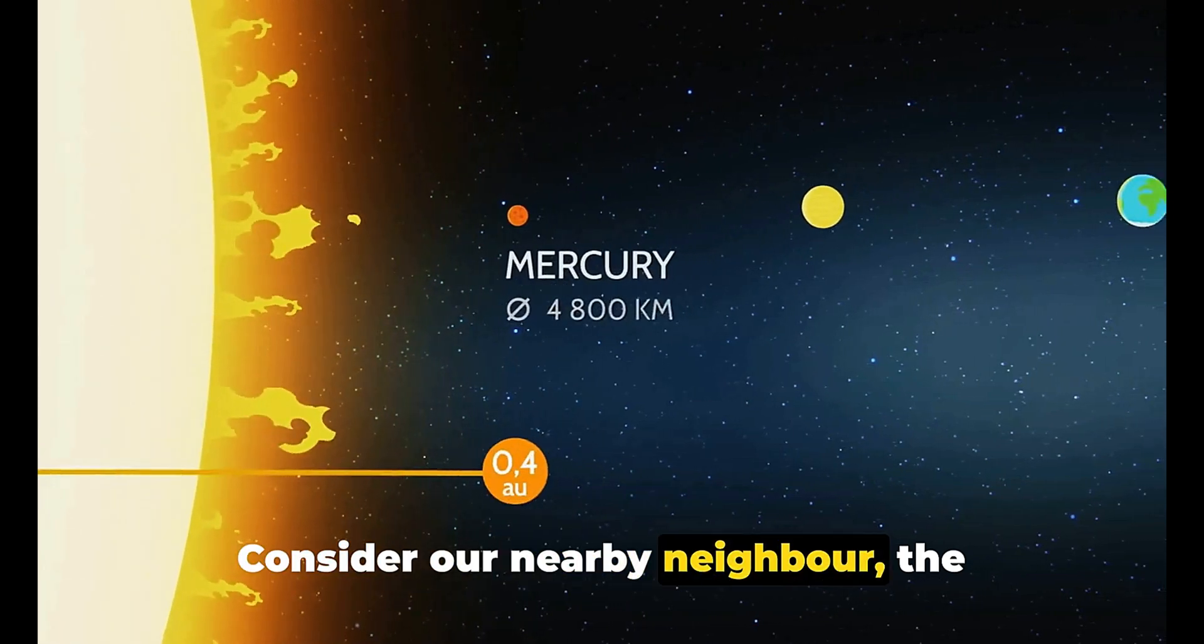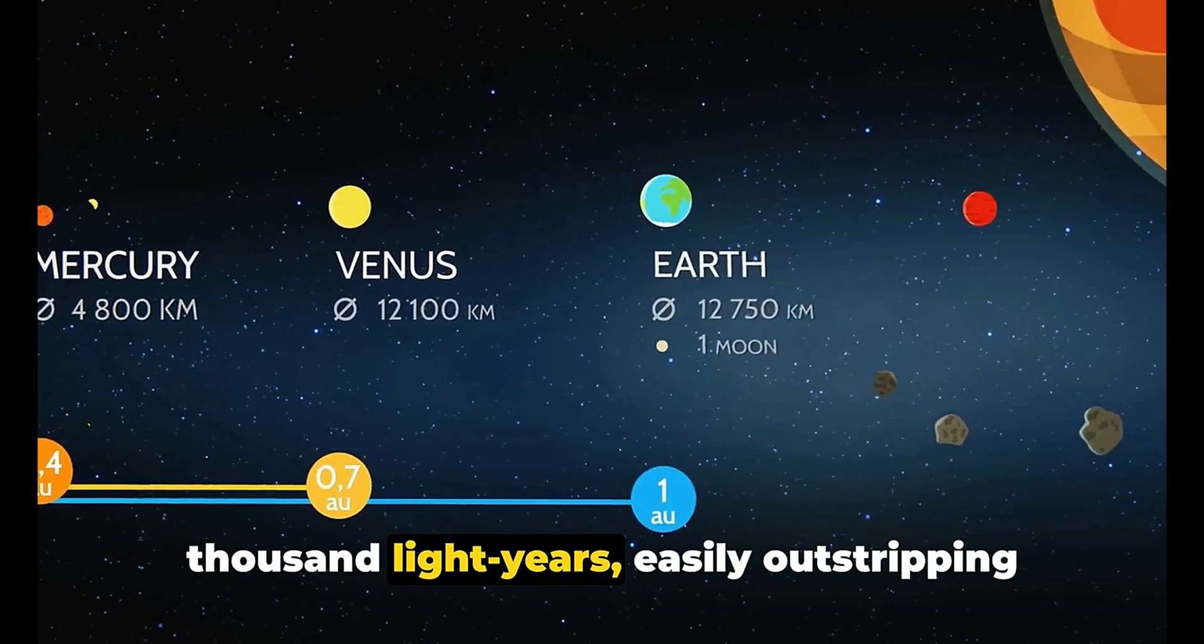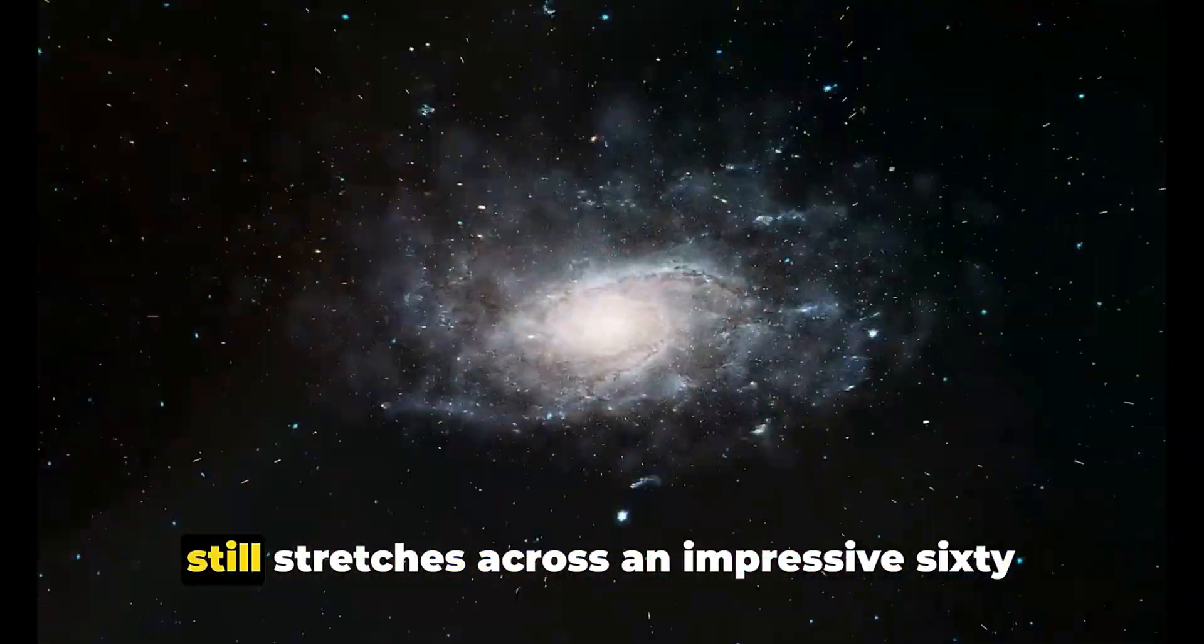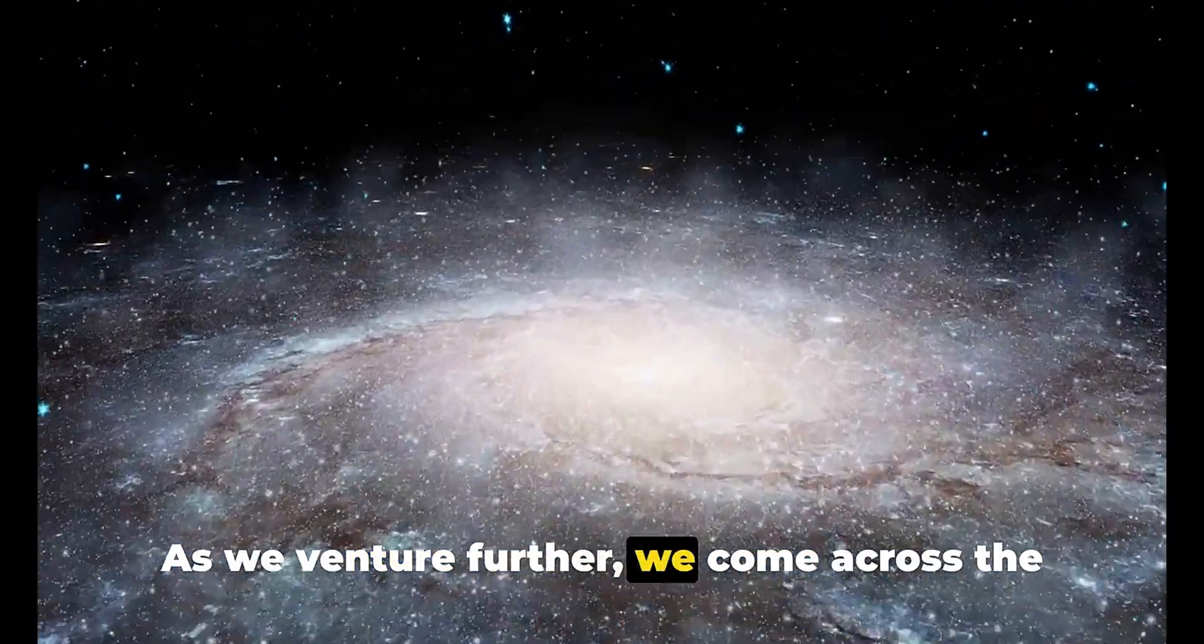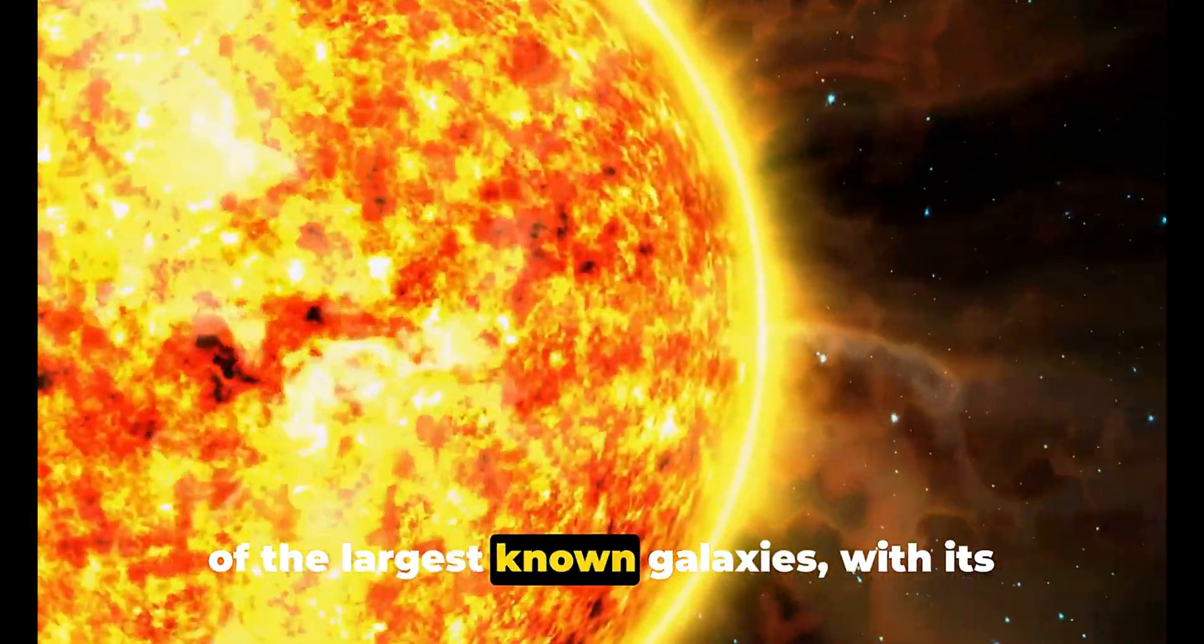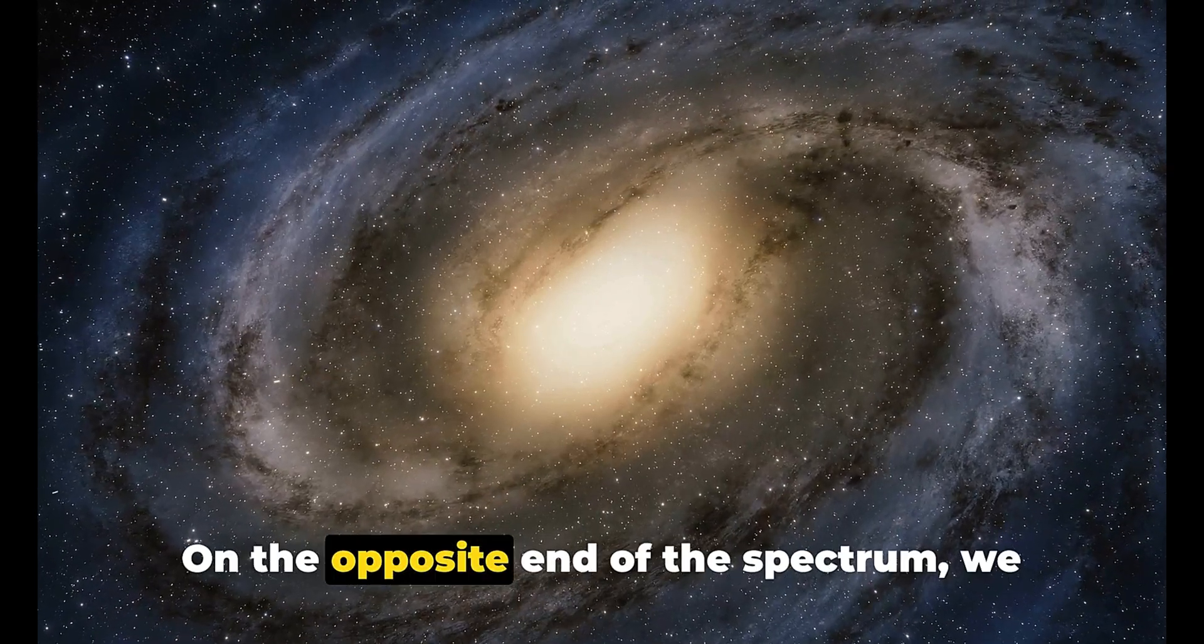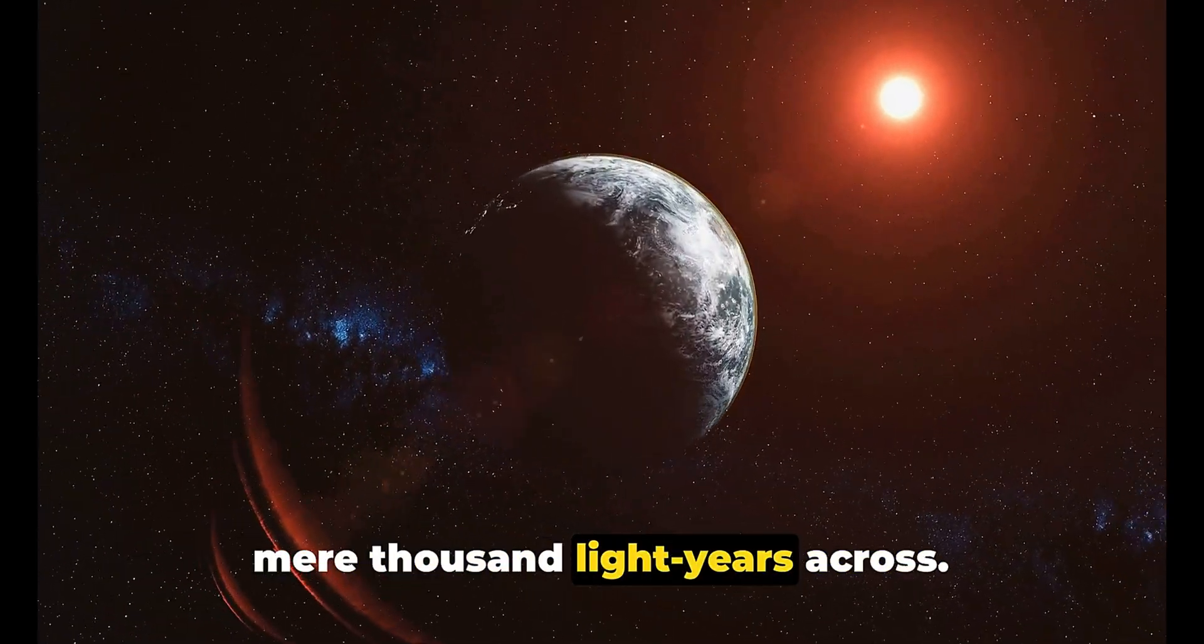Consider our nearby neighbor, the Andromeda galaxy, which boasts a diameter of approximately 220,000 light-years, easily outstripping our own in size. Triangulum, another member of our local group, though smaller than the Milky Way, still stretches across an impressive 60,000 light-years. As we venture further, we come across the enormous IC 1101, which is considered one of the largest known galaxies, with its astronomical diameter of approximately 6 million light-years. On the opposite end of the spectrum, we have Segway 2, a petite galaxy spanning a mere thousand light-years across.